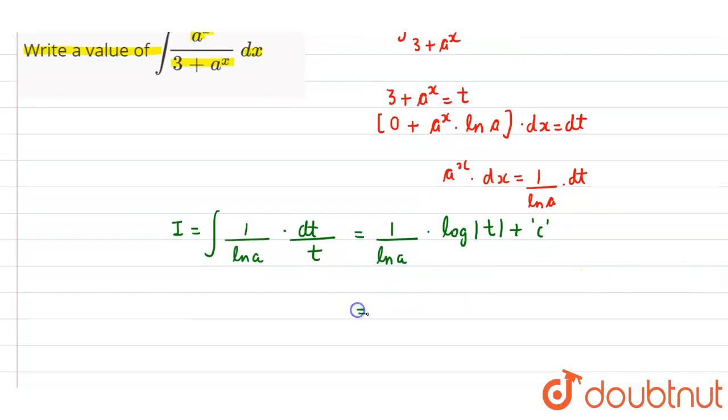Where c is the integration constant. So we can write 1 upon natural log of a log mod. What is the value of t? t value is 3 plus a to the power x plus c.